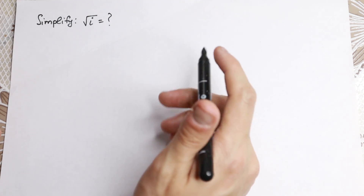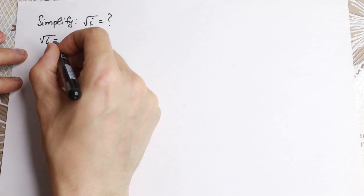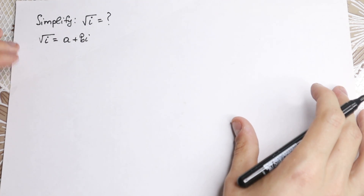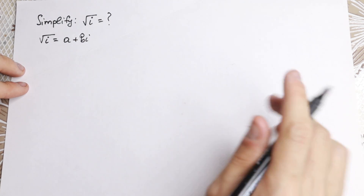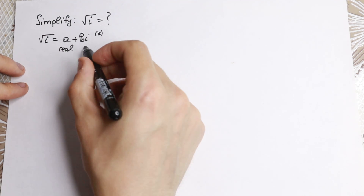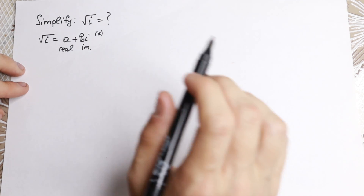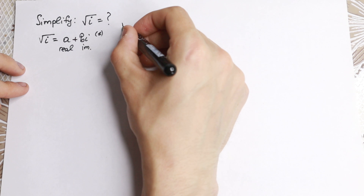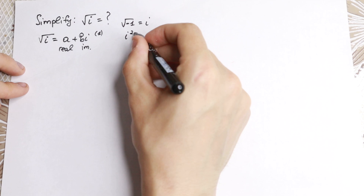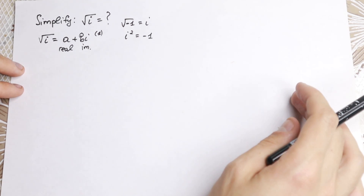Every complex number can be written in a standard form, so we can write √i = a + bi. We'll call this equation 1. Here, a is our real part and bi is our imaginary part. We also need two key facts: √(−1) = i, and i² = −1. We need this information going forward.